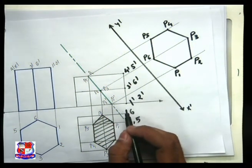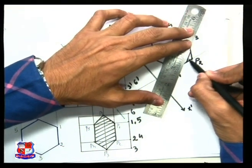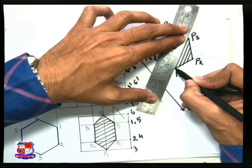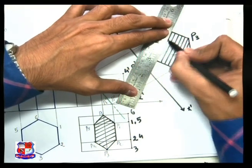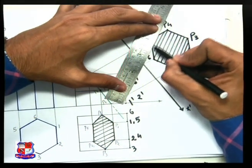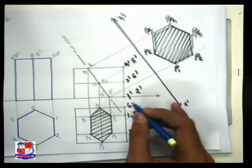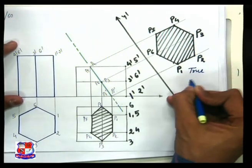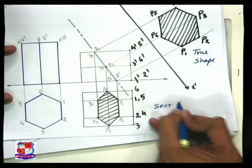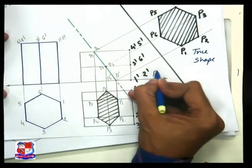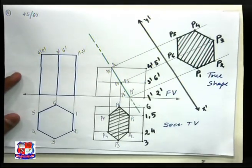In the true shape, draw section lines which make an angle of 45 degrees with the auxiliary reference line — not with the XY line. These section lines should make an angle of 45 degrees with the auxiliary reference plane X1Y1 or X dash Y dash. Write the names of the respective views clearly: this is the true shape, this is the sectional top view, and this is the front view. These three views show the complete solution.